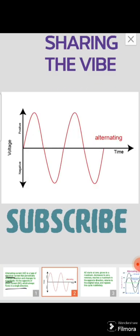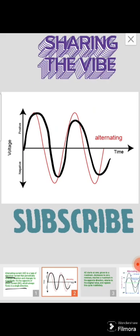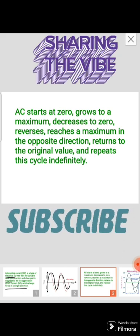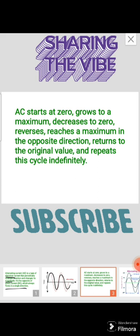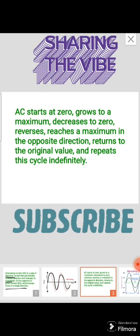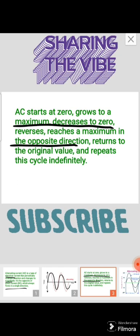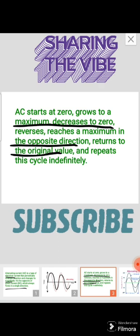This is the alternating current which is moving from left to right. AC current starts at zero, grows to a maximum value, decreases to zero, reverses, reaches a maximum in the opposite direction, returns to the original value, and repeats this cycle indefinitely.